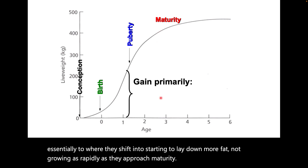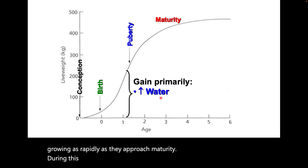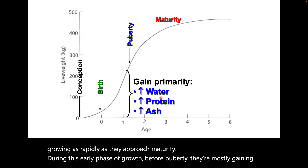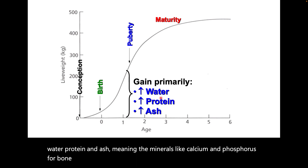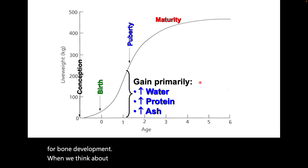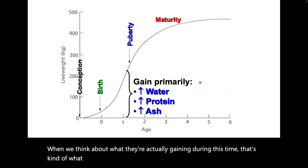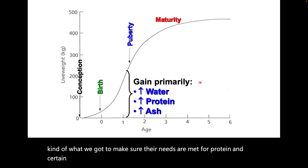During this early phase of growth before puberty, they're mostly gaining water, protein, and ash — meaning minerals like calcium and phosphorus — for bone development. When we think about what they're actually gaining during this time, we've got to make sure their needs are met for protein and certain minerals, as well as the calories to be able to do that.